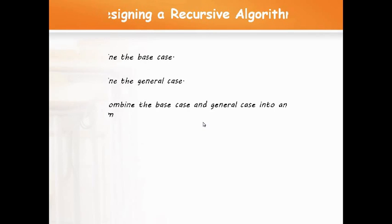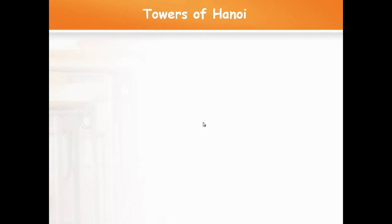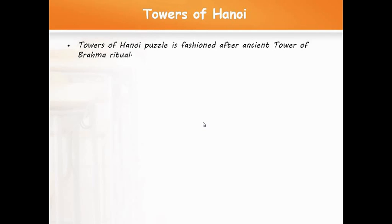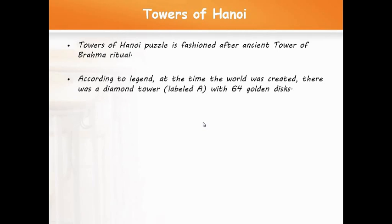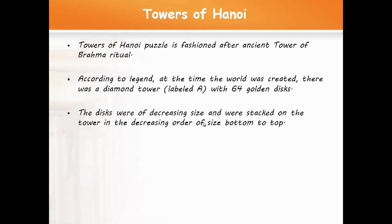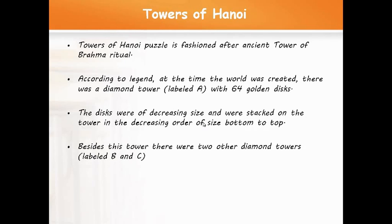Let us take the example of the Towers of Hanoi problem. The Towers of Hanoi puzzle is fashioned after an ancient Tower of Brahma ritual. According to legend, at the time of world creation there was a diamond tower named A with 64 golden discs. All the discs were placed in decreasing size, stacked on top of the tower, with the smaller disc placed on the larger disc. Besides this tower, there are two other towers named B and C.